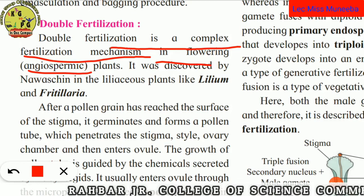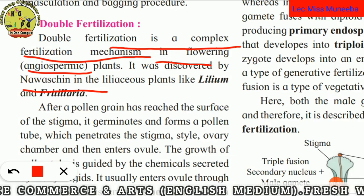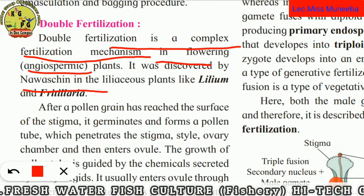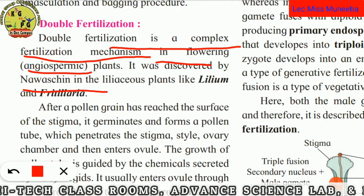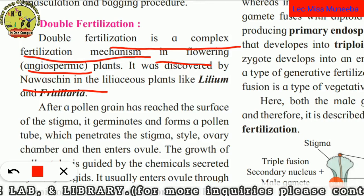Double Fertilization is a complex fertilization mechanism found in flowering angiospermic plants. It was discovered by Nawaschin in the Liliaceous plants like Lilium and Fritillaria. So Nawaschin is the scientist who discovered Double Fertilization.